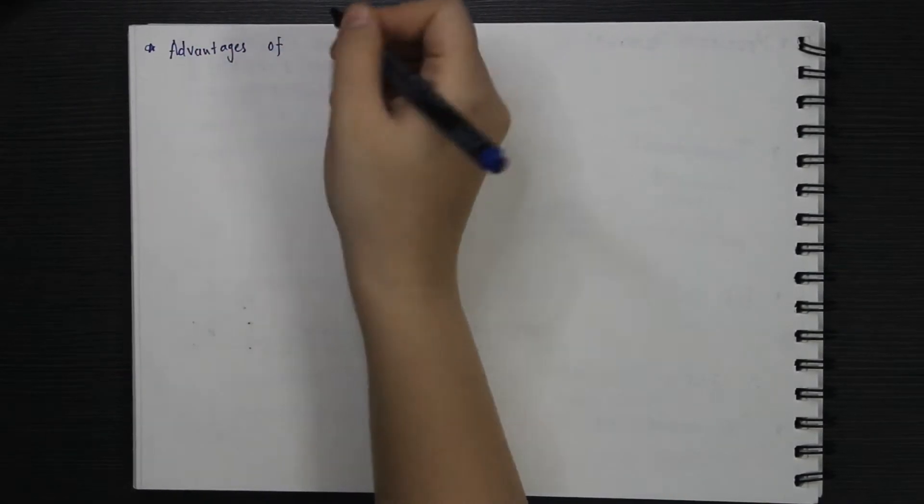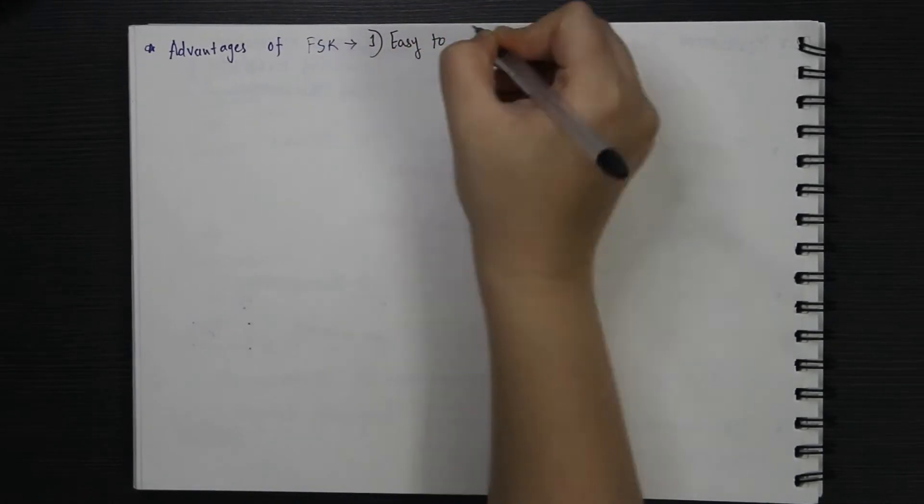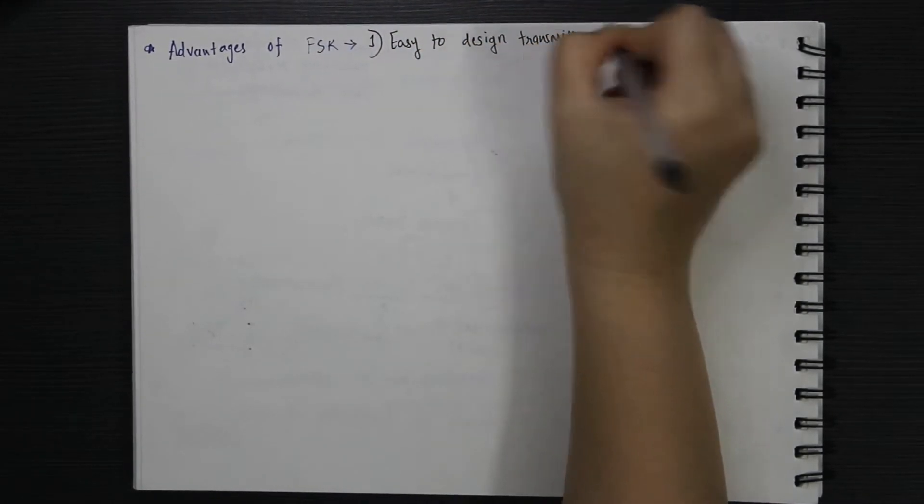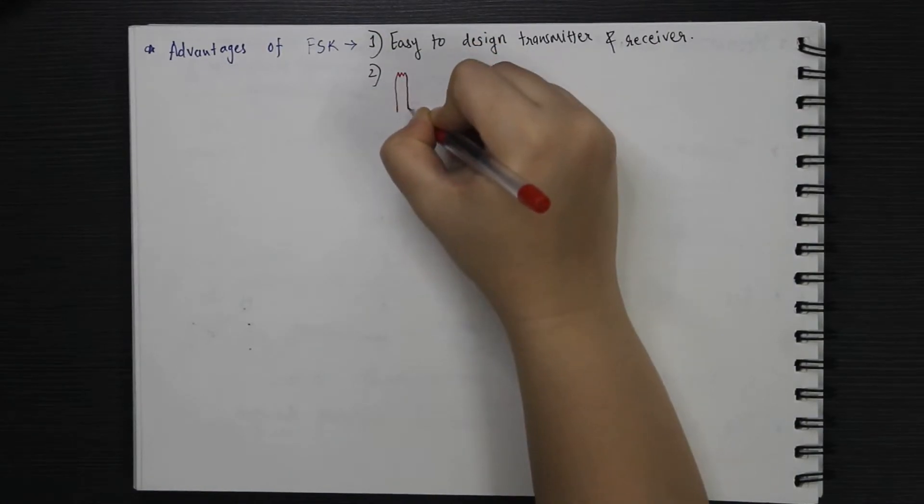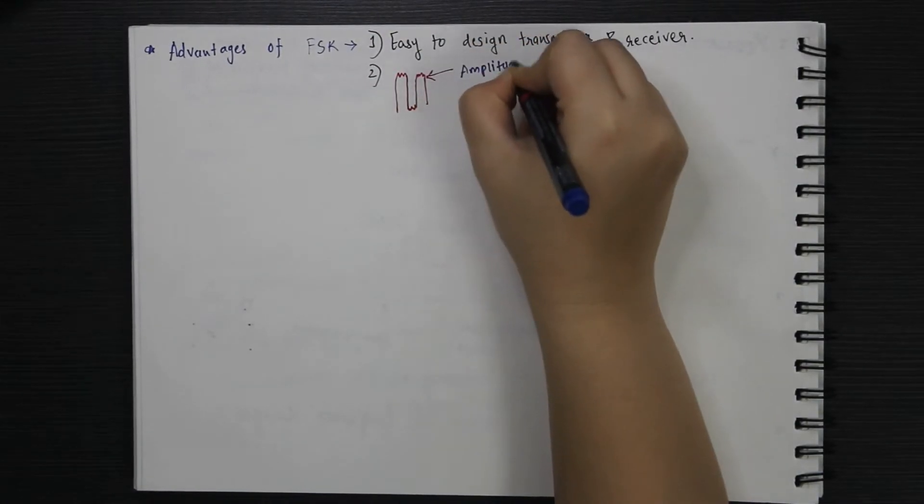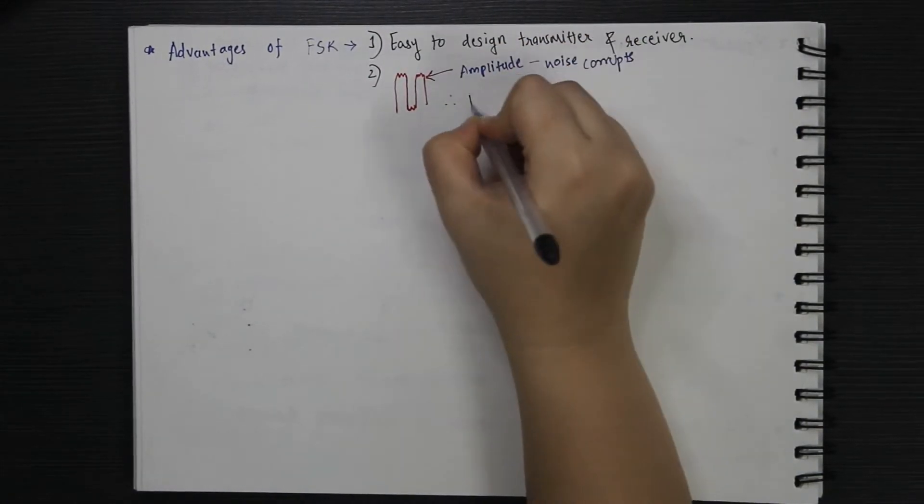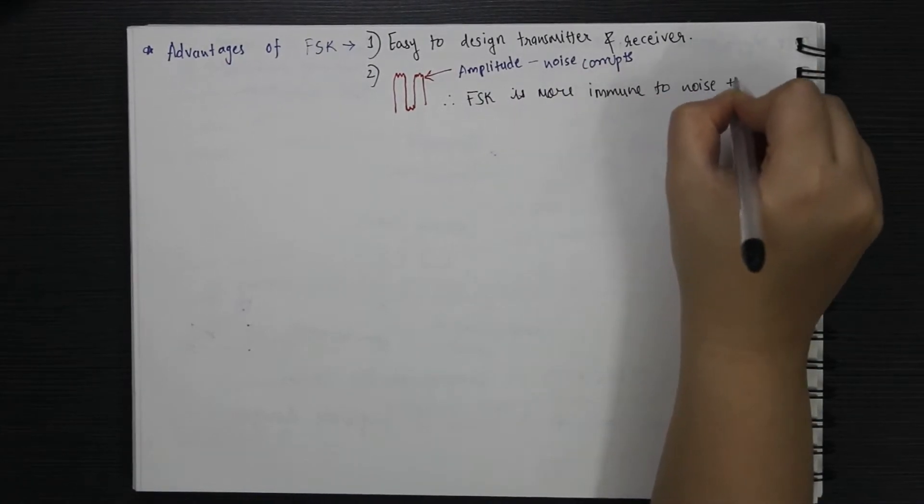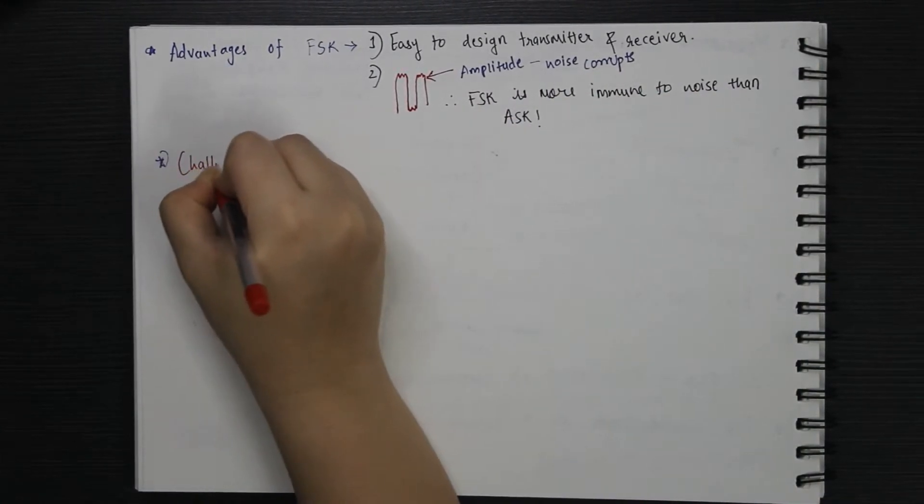Some of the advantages of FSK are you can fairly easily design a transmitter and receiver. Also, the noise signals change the amplitude of a signal, making frequency modulation relatively more immune to noise than amplitude modulation technique.